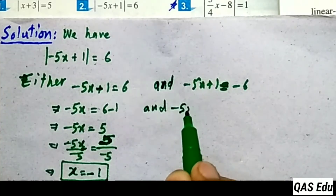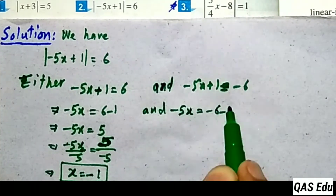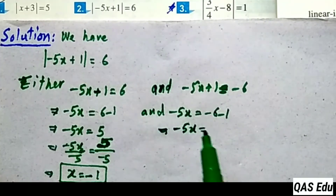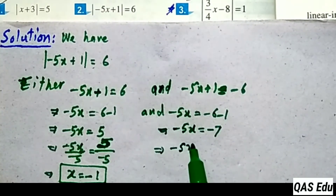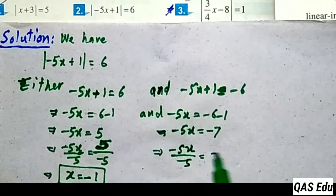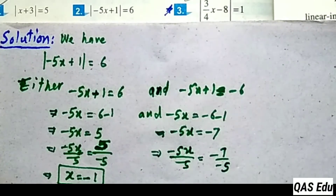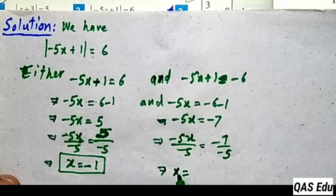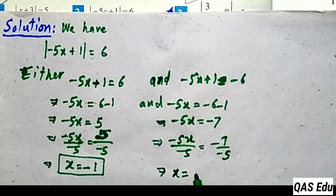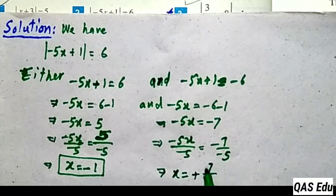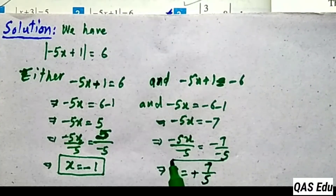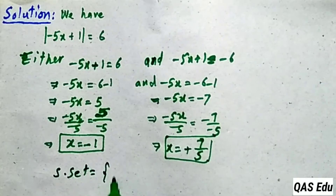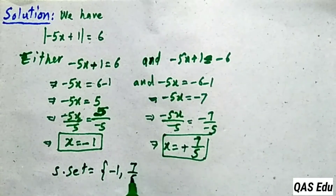For the second equation, minus 5x plus 1 equals minus 6. Move plus 1 to the right as minus 1: minus 6 minus 1 gives minus 7. Dividing both sides by minus 5, the negatives cancel giving x equals 7 over 5. The solution set is minus 1 or 7 over 5.